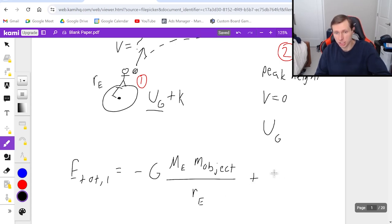Then I have to add the kinetic energy, which is 1 half mass of the object times that velocity squared, and I'm solving for velocity. So that's it for e total 1.